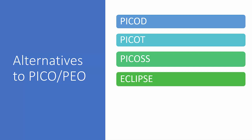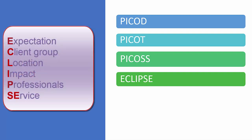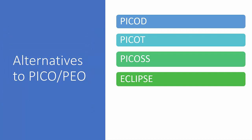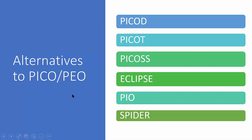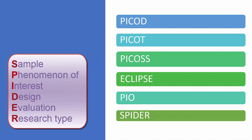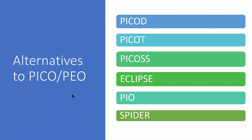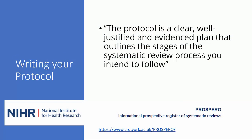The ECLIPSE acronym addresses questions relating to health policy and management, standing for: Expectation — what do you want to find out; Client group — who are you interested in; Location — where was the study carried out; Impact — what's changed as a result of the policy or management change; Professionals; and Service. For qualitative research, in addition to PEO, we have PIO — where I standing for Interest can replace E for Exposure, making it Population, Interest, Outcome. Finally, there is SPIDER, used for qualitative evidence synthesis, standing for Sample, Phenomenon of Interest, Design, Evaluation, and Research Type.